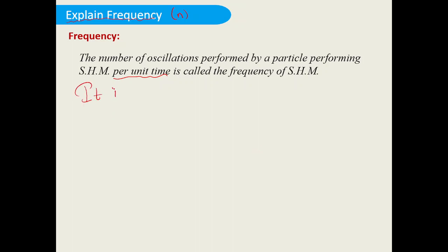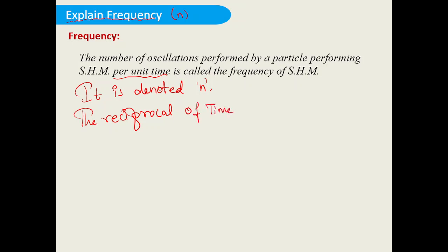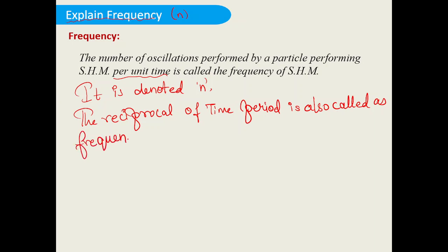Frequency is denoted by n. The reciprocal of time period is also called frequency, so n is equal to 1 upon T.